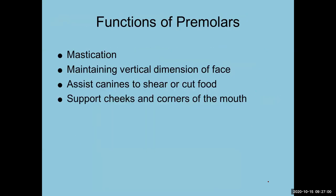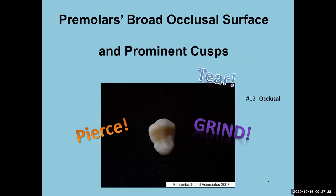What are the functions of premolars? Mastication — chewing. The incisors bite into food, the canines hold and tear, and premolars help with actual chewing. They help maintain vertical dimension of the face, assist the canines to shear and cut food, and support the cheeks and corners of the mouth. They tear, grind, and pierce. They have an occlusal surface — not an incisal edge — and that occlusal surface is called the occlusal table.